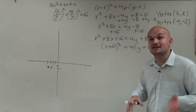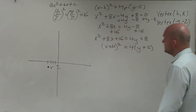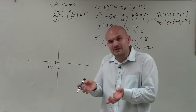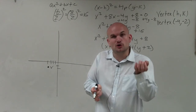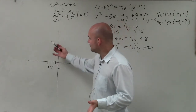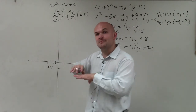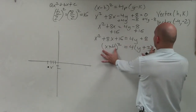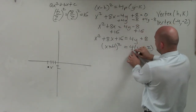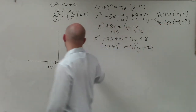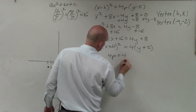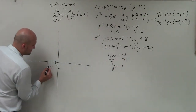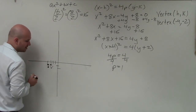Since I have x squared, I need to determine whether the graph opens up or down. I can't tell that unless I know the value of p, because p is the distance from the vertex to the focus. If p is positive, the parabola opens up; if negative, it opens down. From the equation, 4p equals 4, so p equals 1. That means the focus is 1 unit above the vertex, at (negative 4, negative 1). I'll label that point F for focus.